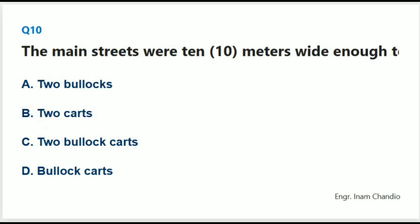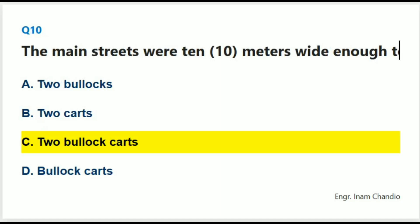The main streets were 10 meters wide, enough to pass by: The correct answer is C. Two bullock carts.